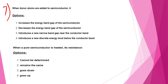When Donor Atoms are added to a semiconductor, what happens? It introduces a new discrete energy level below the conduction band. Option C: it introduces a new discrete energy level above the conduction band.